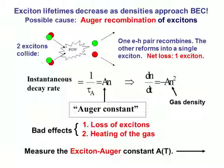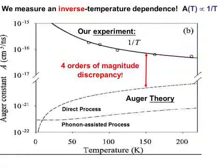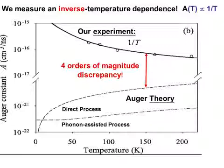Two excitons collide and one recombines, giving large kinetic energies to the remaining electron and hole, which eventually thermalize into a single exciton. The decay time of luminescence gives the Auger constant A as a function of temperature. Theoretically, the Auger constant increases with rising gas temperature, and early experiments seem to support this.